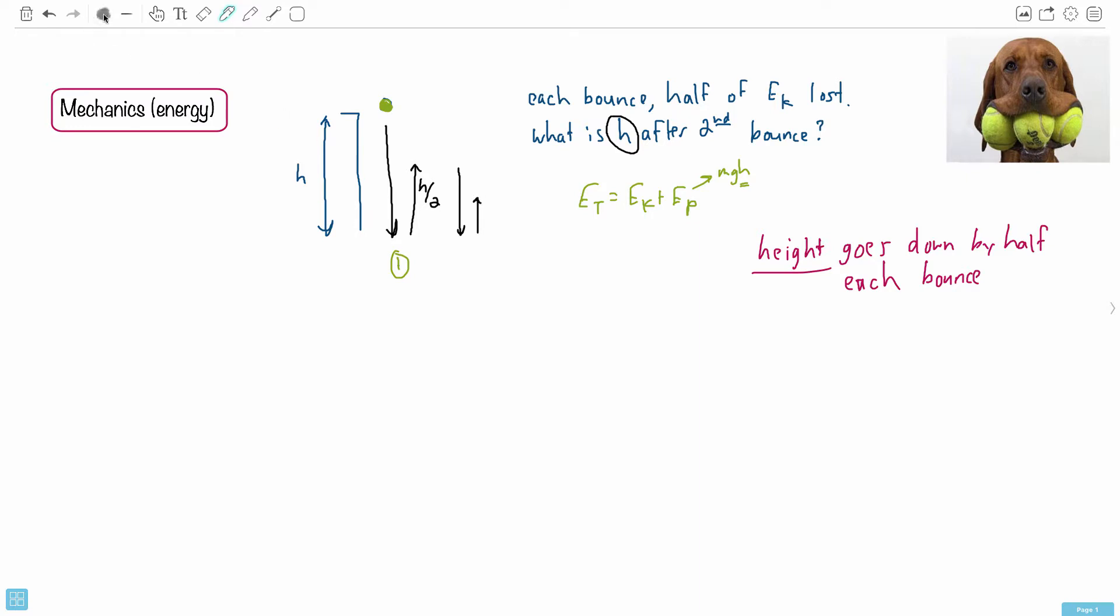So after bounce number two, which is what they're asking for, what is its height? I hope you can see that the height then is half of that: H over 2 over 2, in other words H over 4. So that's all we needed to know—the height is actually going to be H over 4.